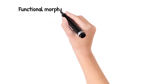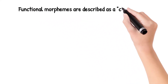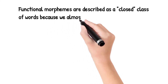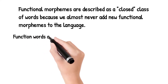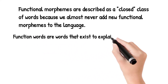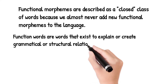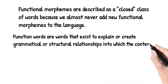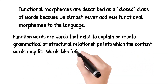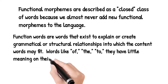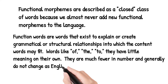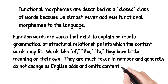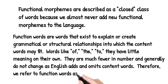Functional morphemes are described as a closed class of words because we almost never add new functional morphemes to the language. Function words exist to explain or create grammatical or structural relationships into which content words may fit. Words like 'of', 'the', and 'to' have little meaning on their own. They are much fewer in number and generally do not change as English adds or omits content words. Therefore, we refer to function words as a closed class.